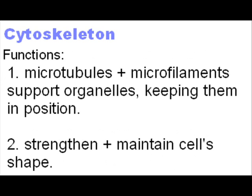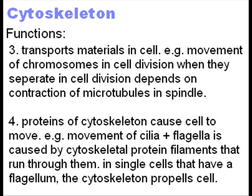The cytoskeleton has four main functions. The microtubules and microfilaments support the cell's organelles, keeping them in position. They also help to strengthen the cell and maintain its shape. They're also responsible for the transport of materials within the cell — for example, the movement of chromosomes when they separate during cell division depends on contraction of microtubules in the spindle. The proteins of the cytoskeleton can also cause the cell to move — for example, the movement of cilia and flagella is caused by the cytoskeletal protein filaments that run through them. So in the case of single cells that have a flagellum, for example sperm cells, the cytoskeleton propels the whole cell.